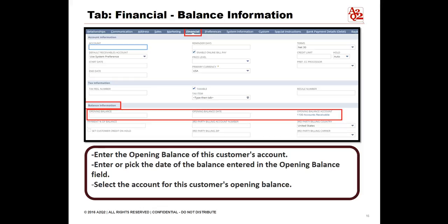Under Balance Information, enter the opening balance of the customer's account. Enter or pick the date of the balance entered in the Opening Balance field. Select the account for this customer's opening balance. If there is only one accounts receivable account, then the field will reflect the account and will no longer show a drop-down menu.